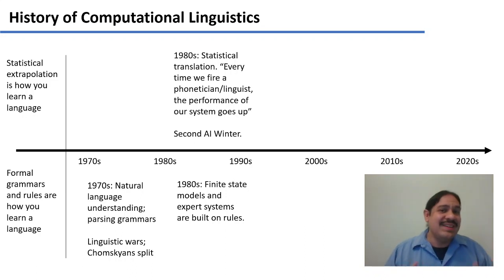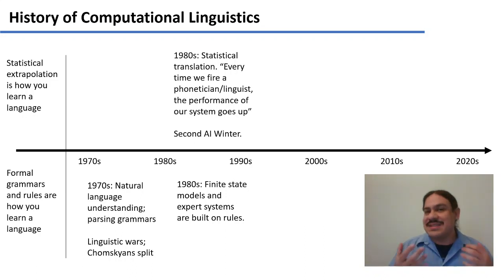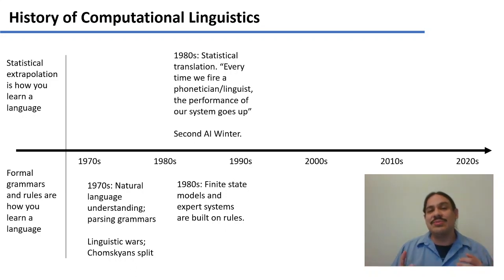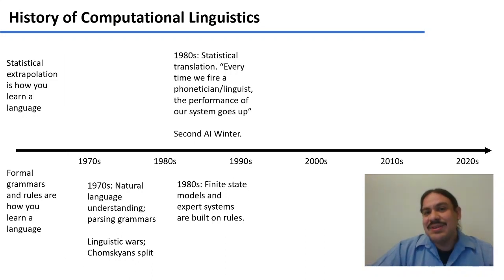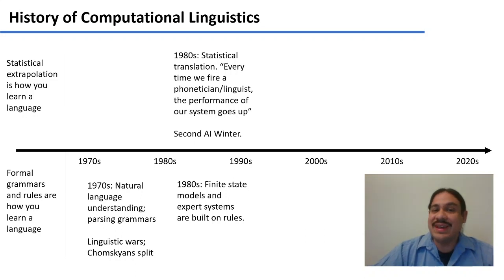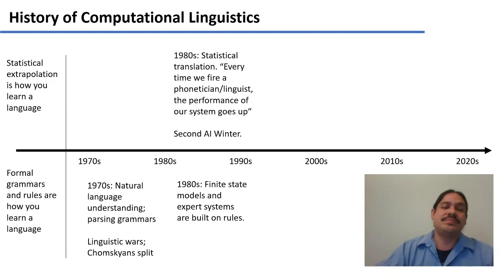Unfortunately, hardware in the 1980s was not up to this task. The volume of data you would need to analyze would be too much for the computers at the time, and artificial intelligence went into a second artificial intelligence winter in the late 80s and early 90s.